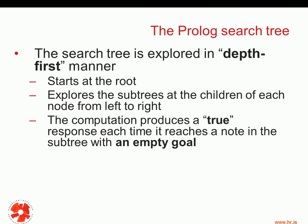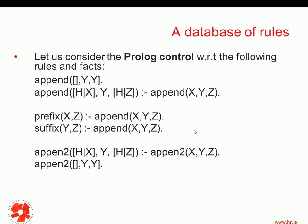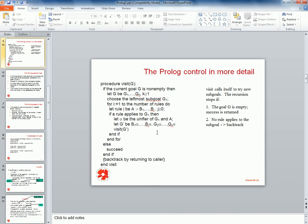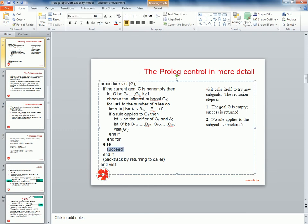The search tree is explored in a depth-first manner, which means we start at the root and then explore the subtree at the children of each node from left to right, doing this recursively. This is why it is depth-first search. The computation produces a true response each time it reaches a node with an empty goal. Once we have an empty goal, the algorithm returns true or succeeds.